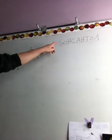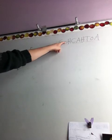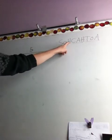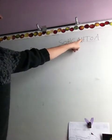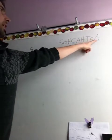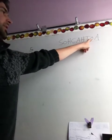SOH means sine equals opposite over hypotenuse. CAH, cosine equals adjacent over hypotenuse. TOA, tangent equals opposite over adjacent.